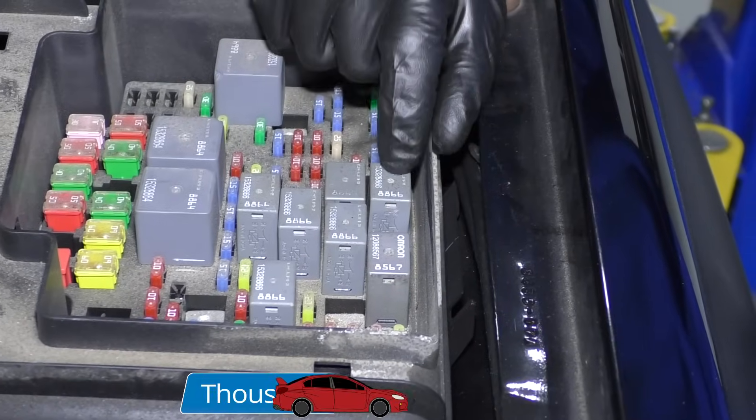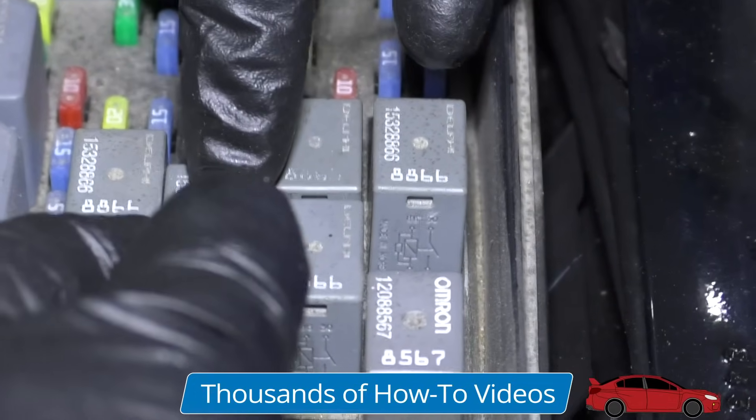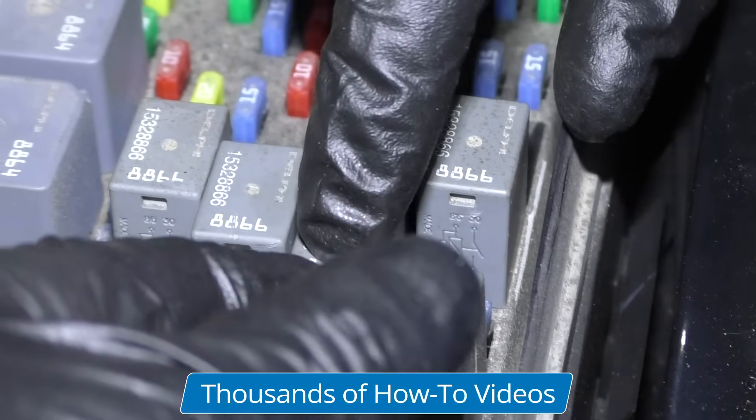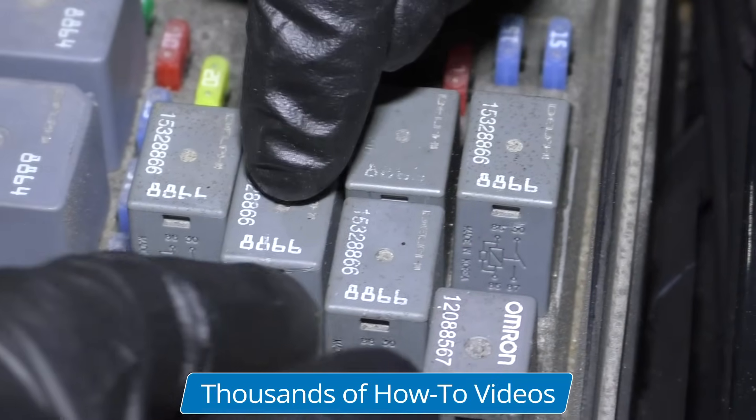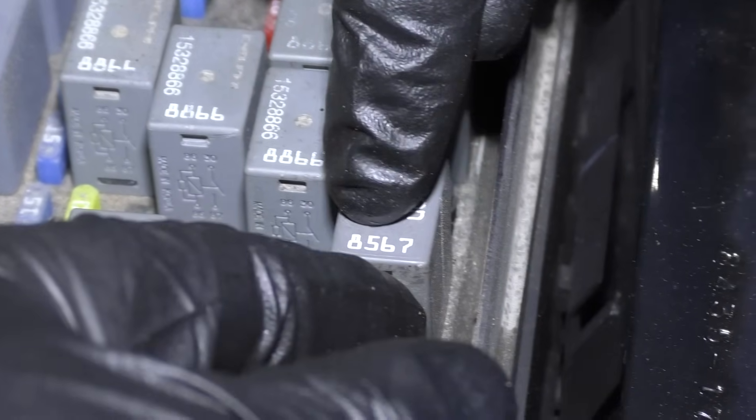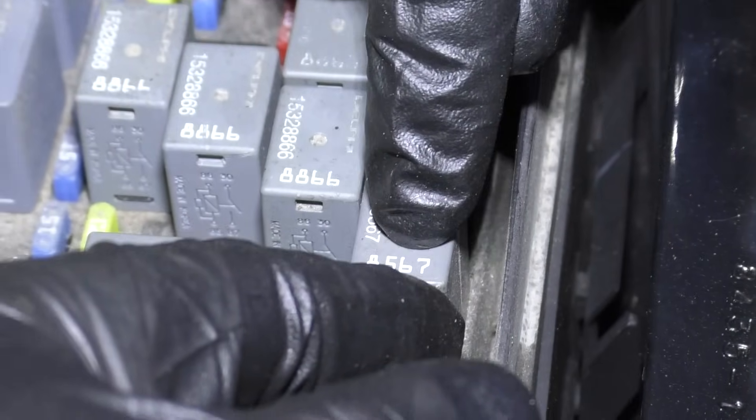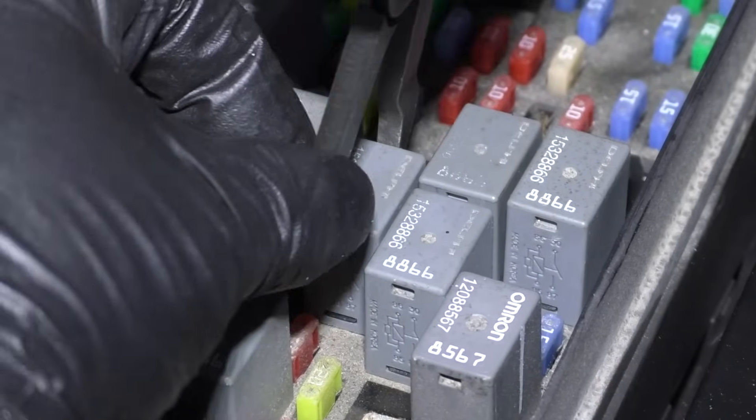So a quick and easy way to test if this relay is bad, what we could do is find another one of these relays and just match the numbers up. So this is 8866, and this one matches over here, 8866. So you wouldn't want to switch it with one of these, 8567. Although the internals are probably very similar, it's not worth the risk. So let's swap the relay.